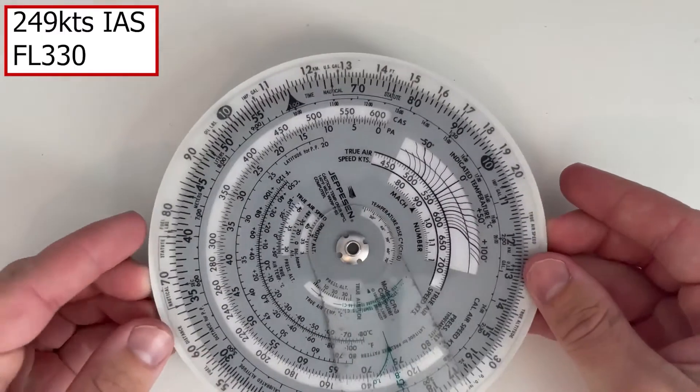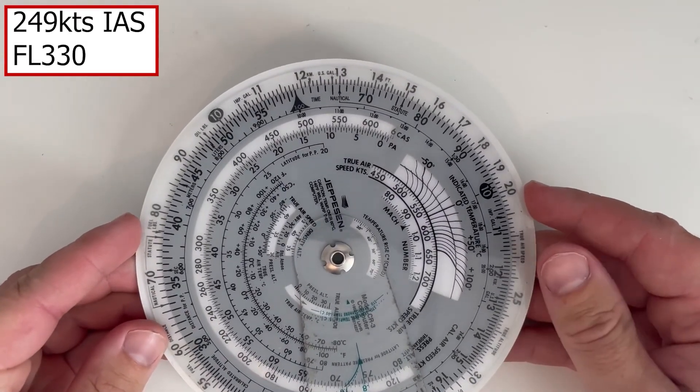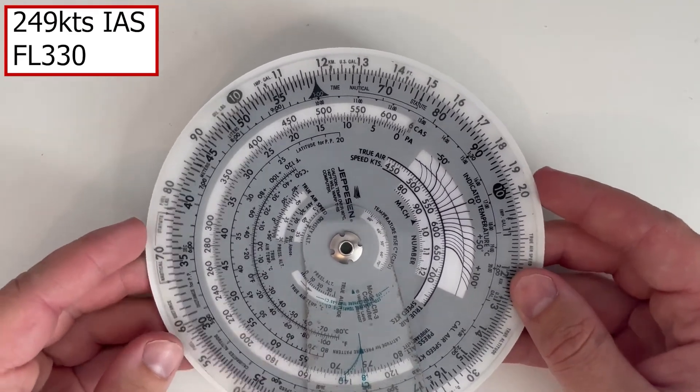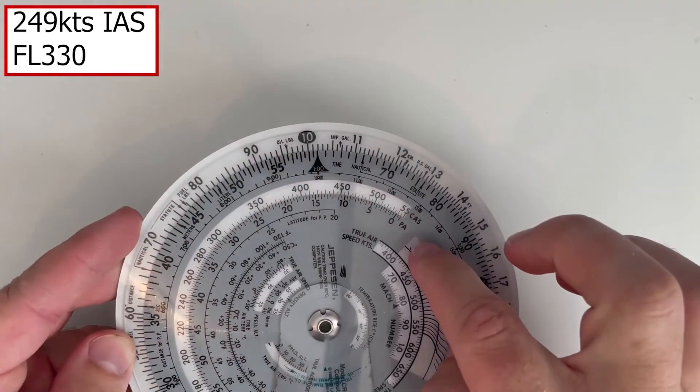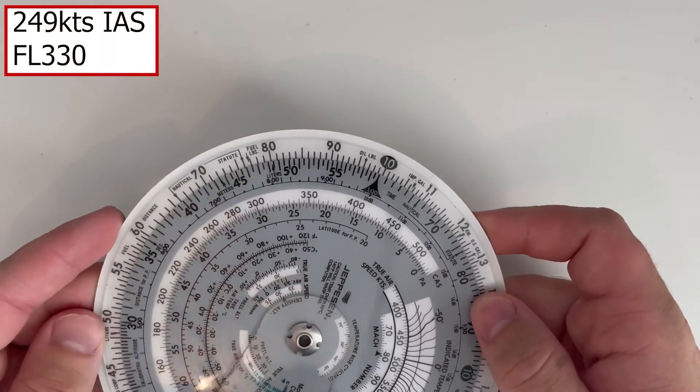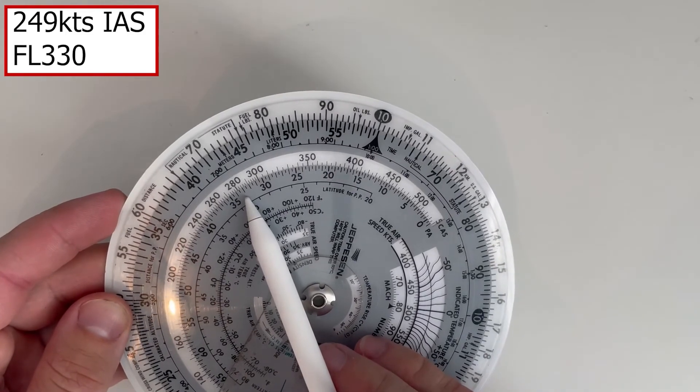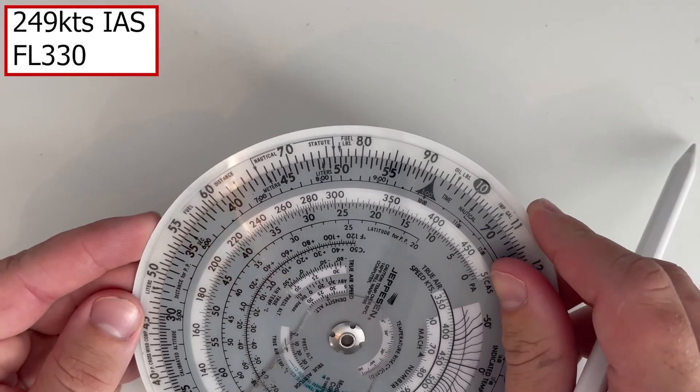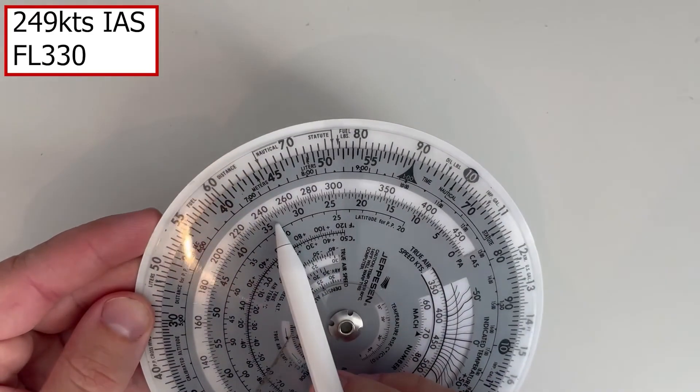So we're going to be lining up 249 knots indicated airspeed, which is what we just calculated, against a pressure altitude of 330, which is our flight level. So calibrated airspeed being in the white section and altitude being in the grey section. So flight level 330 is here and indicated airspeed 249 is going to be here. So line them up. 330 against 249.